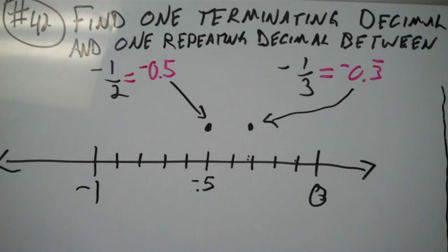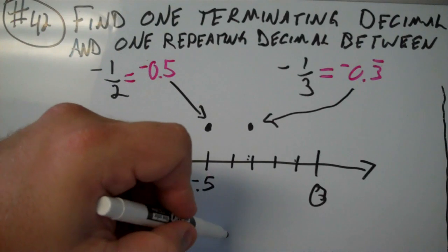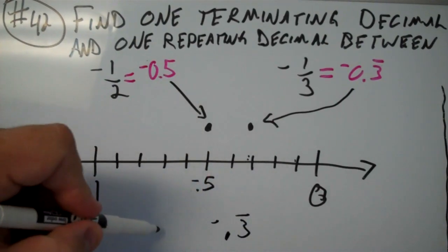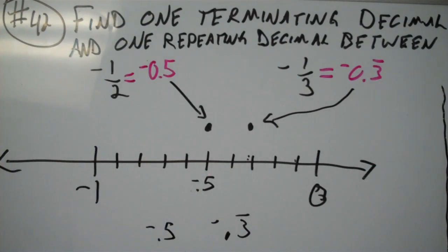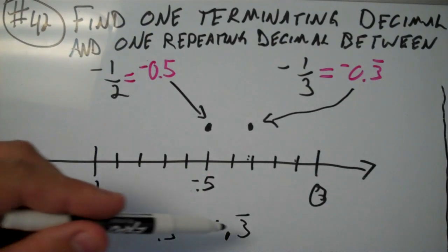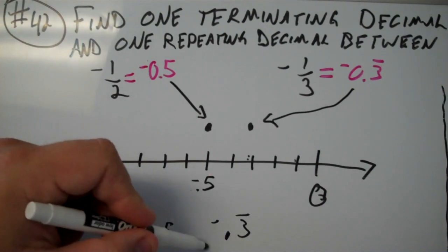So we need first a terminating decimal. Now, this would probably be the easiest one to find. I need some number that's bigger than negative 0.33333, but is more negative than negative 0.33333, but is less negative than negative 0.5. So let's see, I need something between 0.3 repeating and negative 0.5. And an easy number that should fall somewhere in between there would probably be negative 0.4.